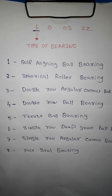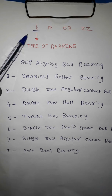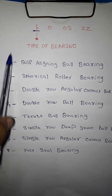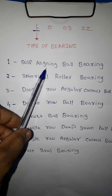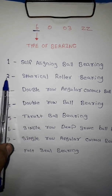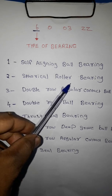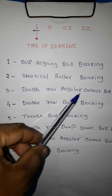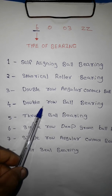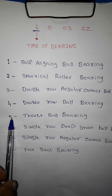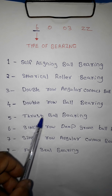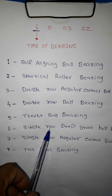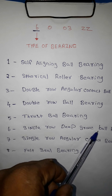The first letter is the shape of the bearing. The numbers are: 1 — self-aligning ball bearing, 3 — double row angular contact ball bearing, 4 — double row ball bearing, 5 — thrust ball bearing, 6 — single row deep groove ball bearing.